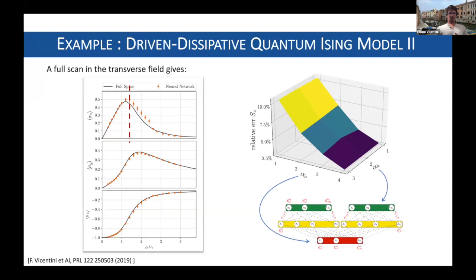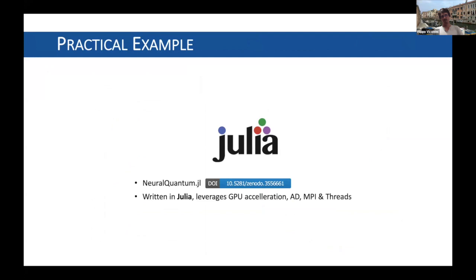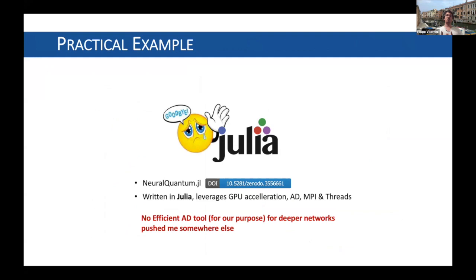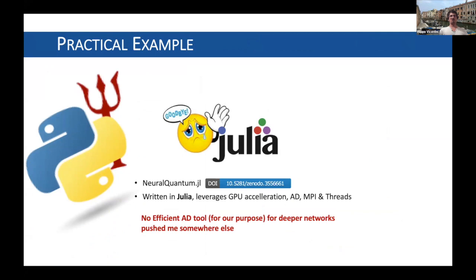Everything I showed was originally done with Julia, so you could take the code and run it yourself. However, at some point I realized that if I want to play with different networks, I need an efficient automatic differentiation tool to compute their gradients. Julia is unfortunately not fit for the job at the moment — it's a bit too young. So Python came into play, and Giuseppe proposed I start implementing the same method in NetKet, which is what I did.